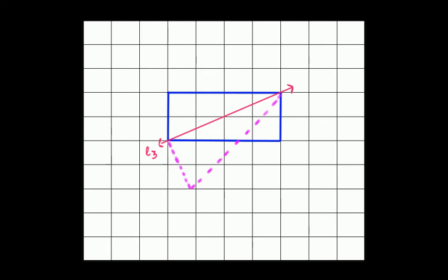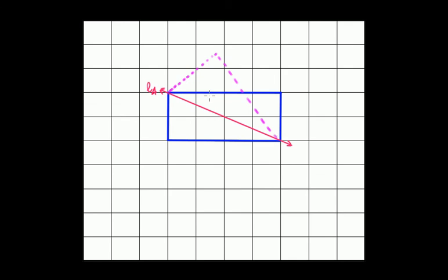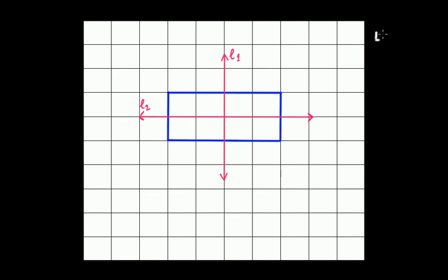The same applies to the other diagonal L4. When you try to fold this section around L4, you again get something that does not overlap — so this is also not a line of symmetry. Therefore, in the case of a rectangle, we get only two lines of symmetry: the first one and the second one. The number of lines of symmetry for a rectangle is two.